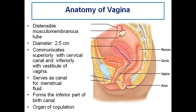After finishing the vulva or the external genitalia, now let us discuss about the vagina, which is the copulatory organ. It is a distensible musculomembranous tube with a diameter of 2.5 cm and a length of around 15 cm. It communicates superiorly with the cervical canal and inferiorly with the vestibule. It serves as the passage for menstrual blood — the endometrial glands shed during the menstrual cycle and through the vagina and the vulval outlet, menstrual blood comes out. During delivery, the baby also passes through this vaginal outlet. It forms the inferior part of the birth canal and is an organ of copulation.